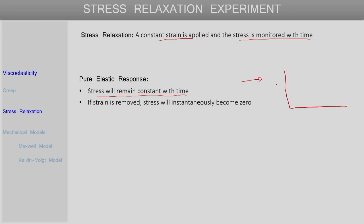If we try to draw the change in stress with time — since the strain has been maintained constant at epsilon = epsilon_0 — for a purely elastic response the corresponding stress will also stay constant with time and if strain is removed the stress will come down to zero. If we have a purely viscous material, since a constant strain is applied there is no strain rate, so correspondingly there would not be any stress. Initially as the strain is applied a sharp spike in stress might be observed, but immediately it will decay to zero.